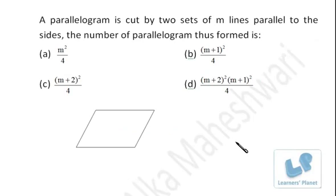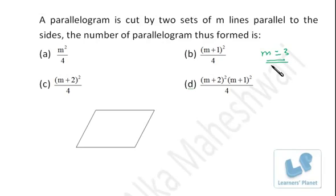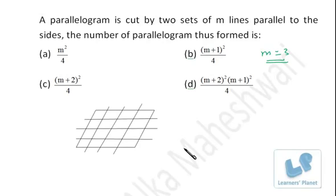Here's an interesting problem: a parallelogram is cut by two sets of M lines parallel to the sides. We need to find the number of parallelograms thus formed. To make it easier, let's take M equal to 3. That means three lines are drawn parallel to each side. With M=3, a simple count gives 4 into 4, which is 16 small parallelograms.